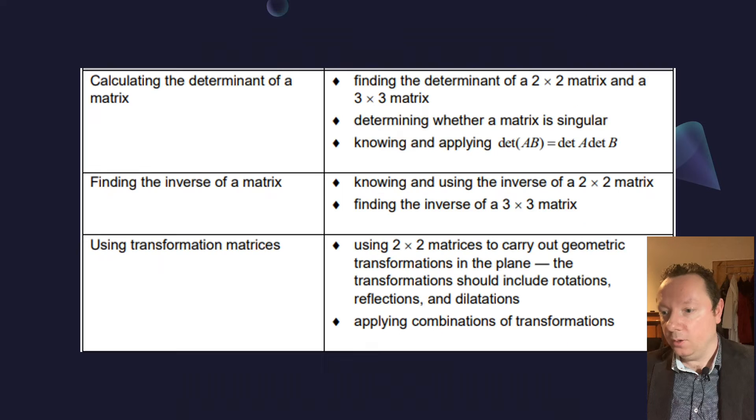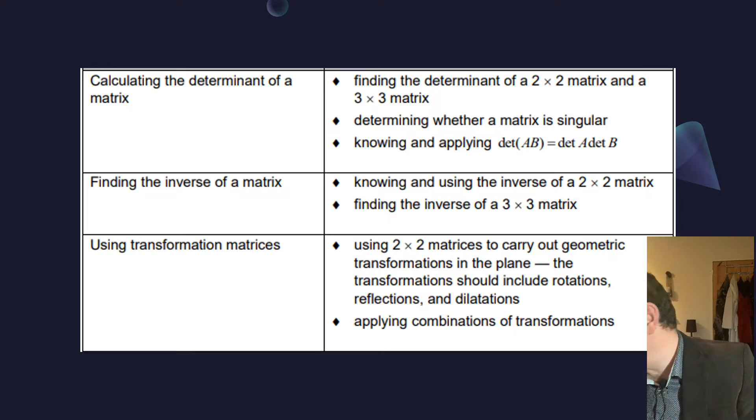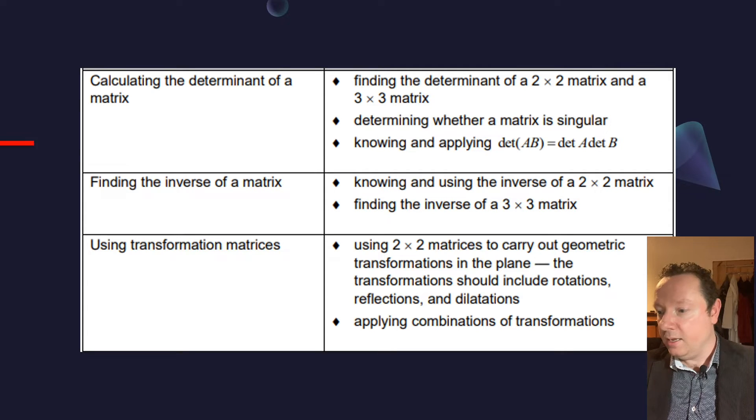Okay, moving on. Calculating the determinant of a matrix, that is still in. So you can still be told to calculate the determinant of a 2x2 and a 3x3 matrix. Remember, you can use the vector product at the start of the exam paper to help you with a 3x3 matrix. Determining whether a matrix is singular is still fine. But the last thing, knowing that the determinant of a and b is the determinant of a times the determinant of b, that is out.